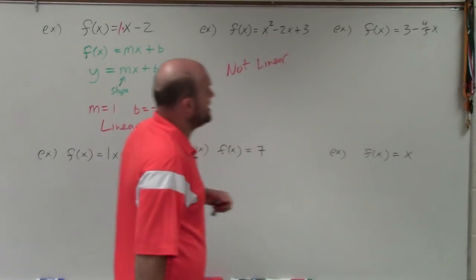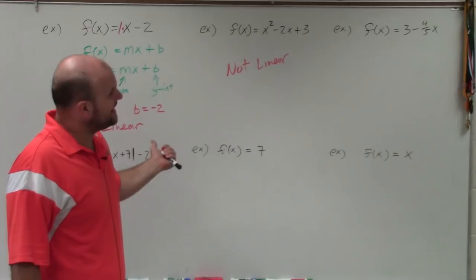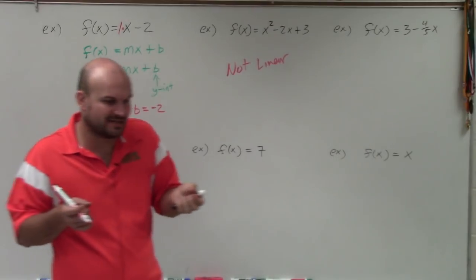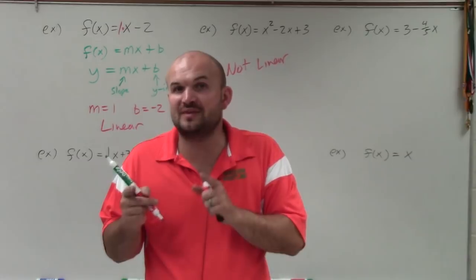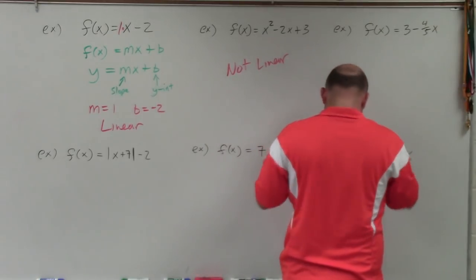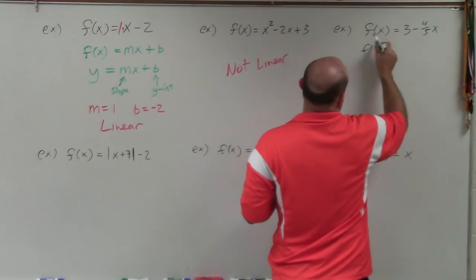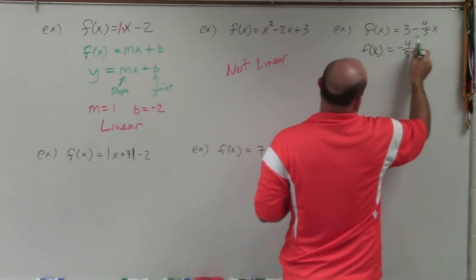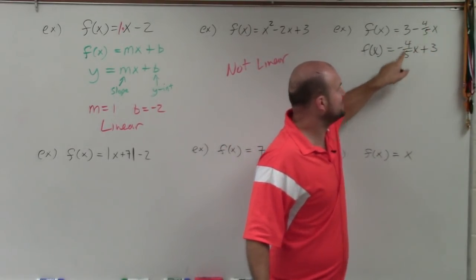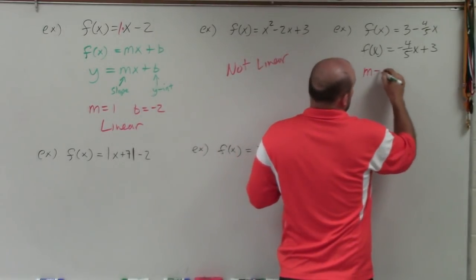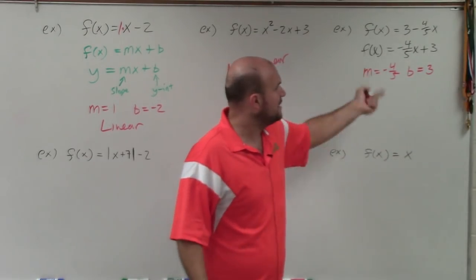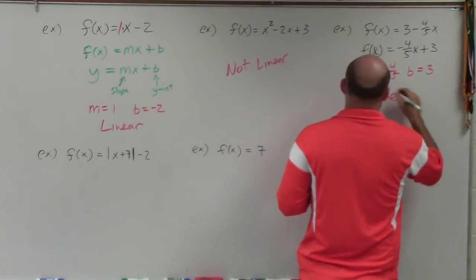The next one, we have f of x equals 3 minus 4 fifths x. It looks similar to what we're looking for, but it's not exactly right. Remember, if I was going to say 5 minus 2, that's the same as saying negative 2 plus 5. So I can rearrange these as long as I keep the signs the same. When I rearrange this, I obtain f of x equals negative 4 fifths x plus 3. Make sure the 3 is still positive and the 4 fifths is still negative. Now I have an m: m is negative 4 fifths, and b equals 3. My slope is negative 4 fifths and my y-intercept is 3, so it is a linear function.